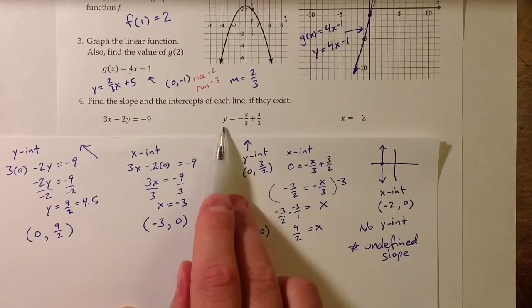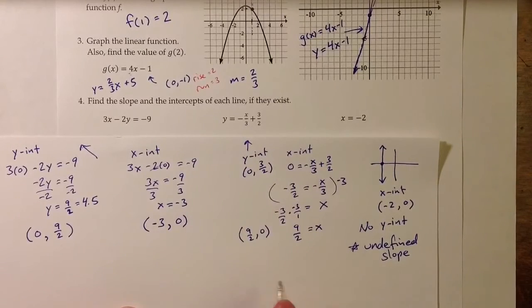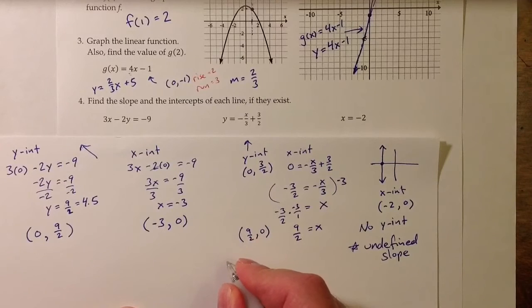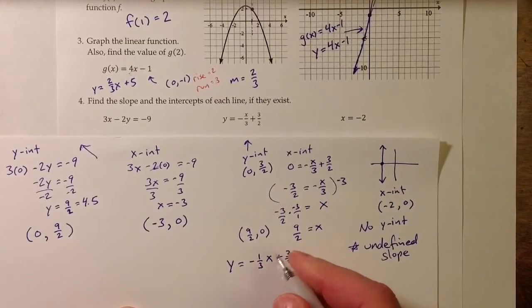Here, the line that we're given is y equals negative x over 3 plus 3 halves. That is essentially in slope-intercept form. It's equivalent to y equals negative 1 third x plus 3 halves. So the slope for that middle equation is negative 1 third.